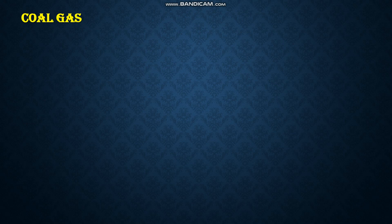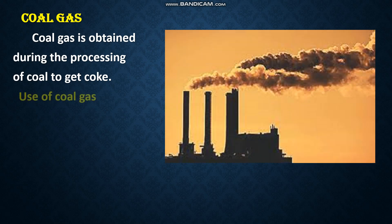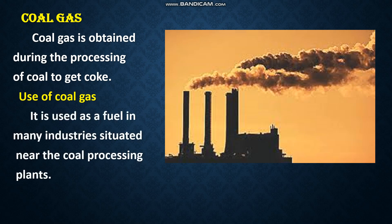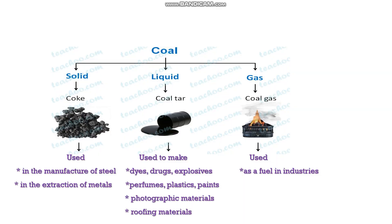Next, let us see the uses of coal gas. Coal gas is obtained during the processing of coal to get coke. It is used as a fuel in many industries situated near coal processing plants. Coal gas was used for street lighting for the first time in London in 1810 and in New York around 1820. Nowadays it is used as a source of heat rather than light. So the three products obtained from coal are coke, coal tar, and coal gas.